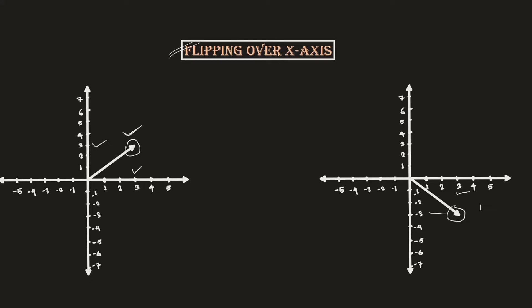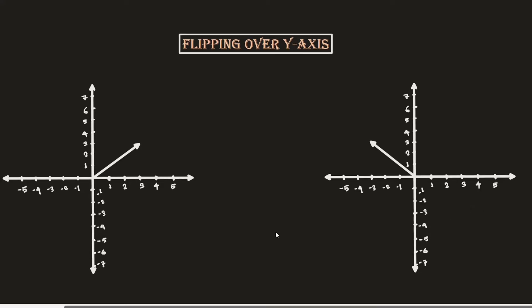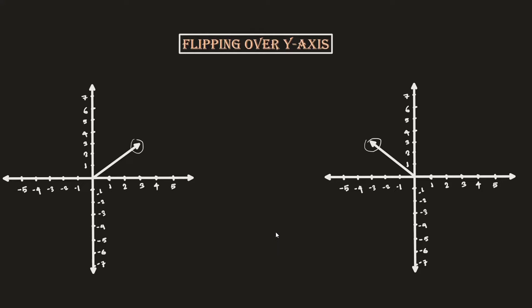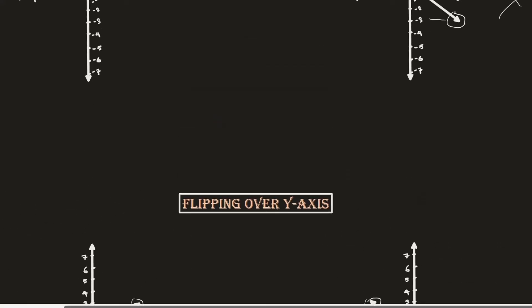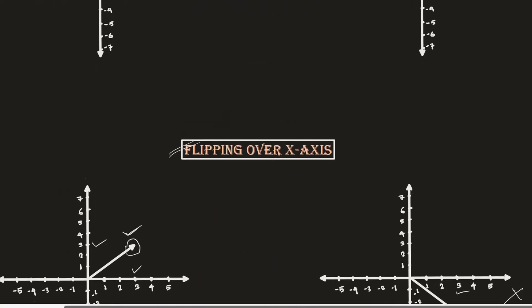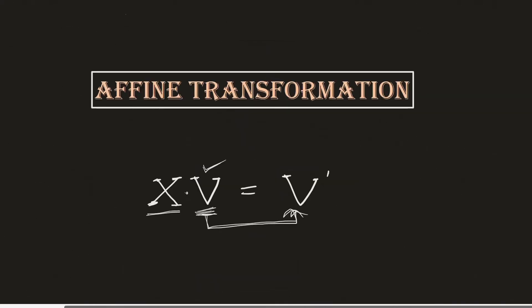Similarly, we also have a transformation of flipping a vector over the y-axis. Comparing both vectors, the magnitude remains the same — it has just changed direction by flipping over the y-axis. So we've seen different kinds of transformations: flipping, scaling, and rotation.